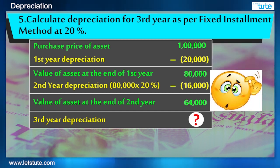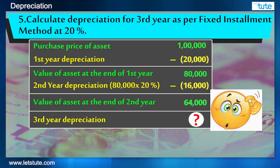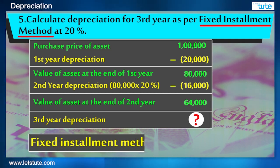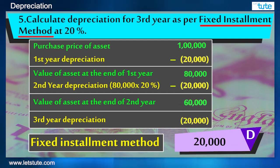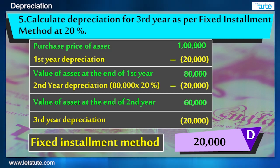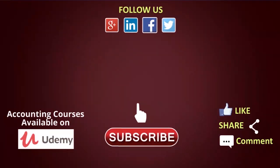Did you find the mistake here? It was to be calculated as per fixed installment depreciation — for the third year it will be 20,000 only. That's all for now. I hope you enjoyed it. If you like this session, do give it a like, leave your comments in the comment section below, and don't forget to subscribe if you haven't already. Until next time, keep watching, keep learning.